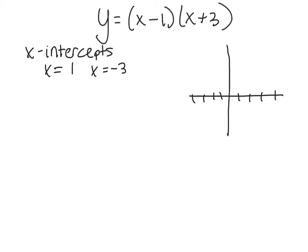So I'm going to put a dot for my x-intercept. I'm going to put 1 at positive 1 and I'm going to put 1 at negative 3. All right now I need to find my axis of symmetry and I know my axis of symmetry is going to be halfway between those two points.